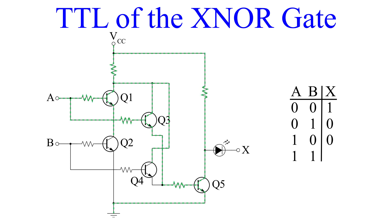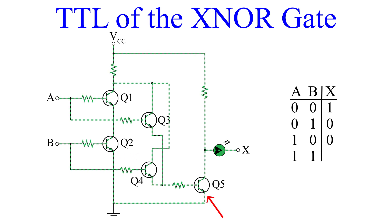Last, we have inputs A and B both equal to 1. Transistors Q1 through Q4 are all forward biased. However, when you look at transistor Q5, you see that the base and emitter have the same voltages applied to both pins. Since there is no potential difference between the base and emitter, this prevents Q5 from turning on. So what ends up happening is that the current bypasses Q5 and goes to the LED, turning it on and giving us an output that is high. So for inputs A and B equal to 1, the output is also 1.